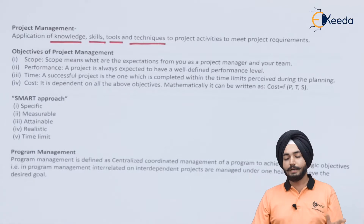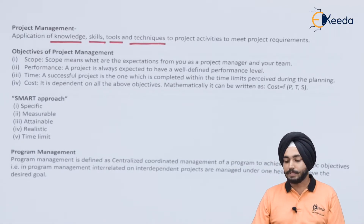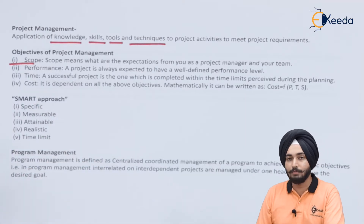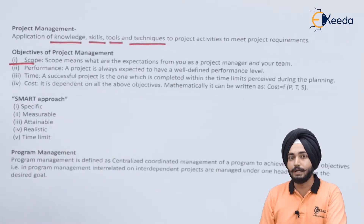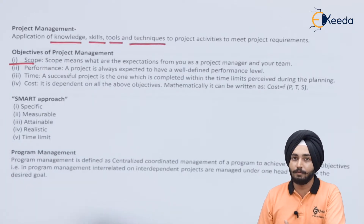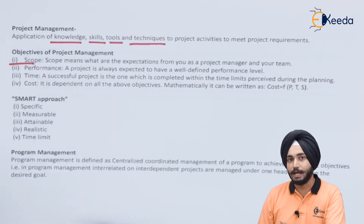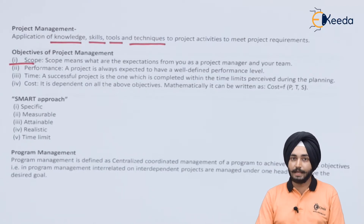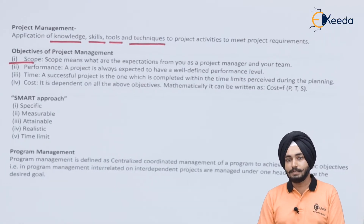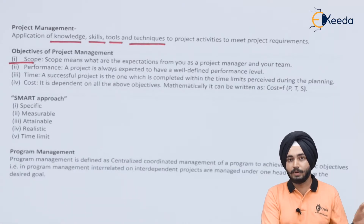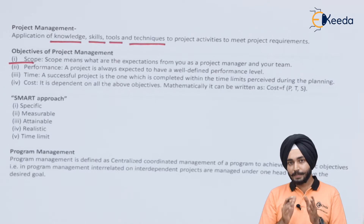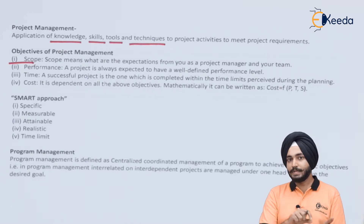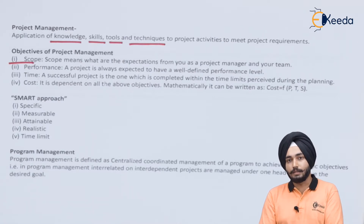The first objective is scope. Scope means to what extent you have to do the work — what exactly needs to be done. For example, if I want to lay railway lines, I need to know from where to where, what survey is required, what amount of excavation is needed, and how many rail lines are required. You have to be very specific in defining the scope, and it must be mentioned in the contract document between the client and the contractor to avoid conflicts later on.